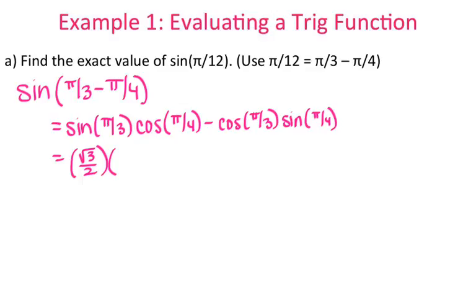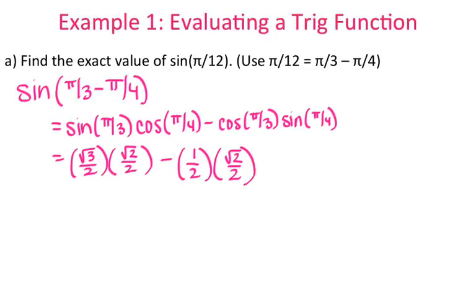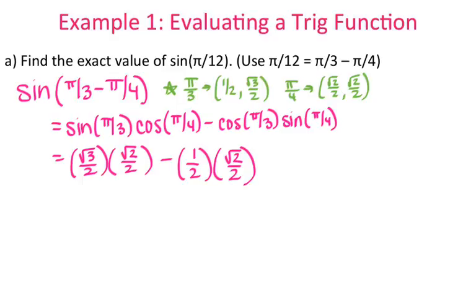Cosine is my x coordinate, and my x coordinate at pi over 4 is root 2 over 2. If it's helpful, you might want to write down your ordered pairs for each of those angles. So for example, pi over 3 ordered pair is (1/2, root 3 over 2), and pi over 4 is (root 2 over 2, root 2 over 2). Cosine is your x, sine is your y — cosine is your x, sine is your y — and then you just replace those values accordingly.